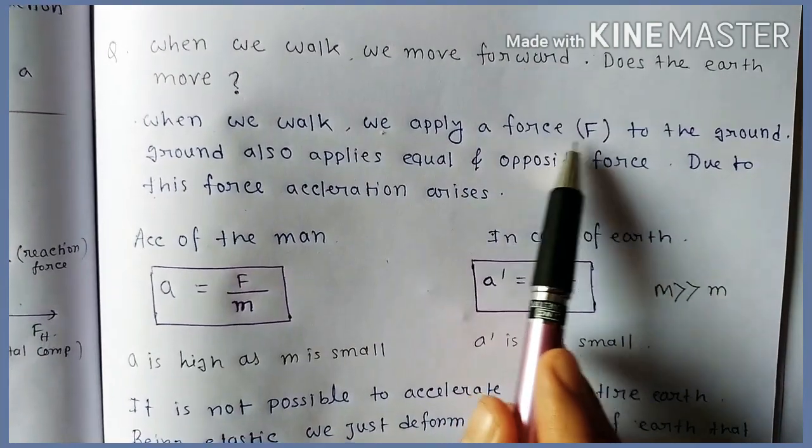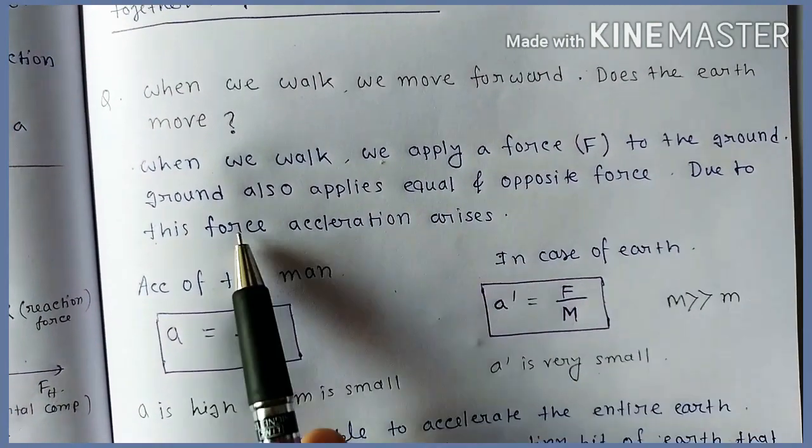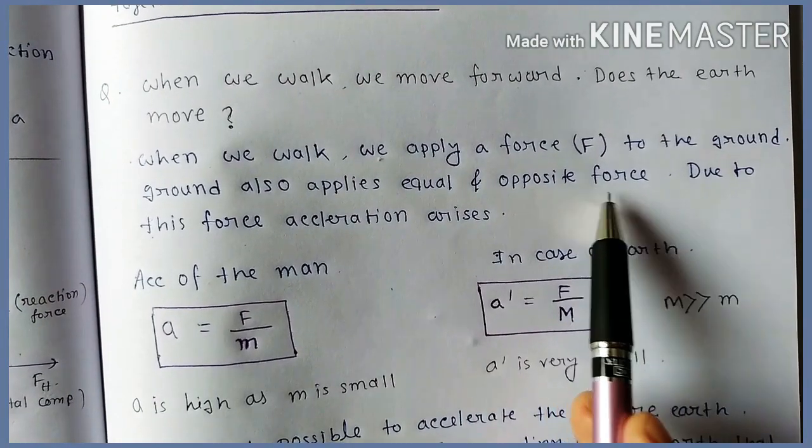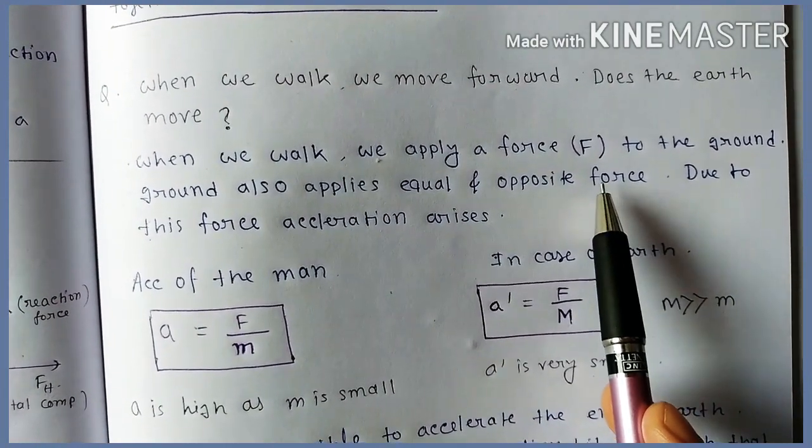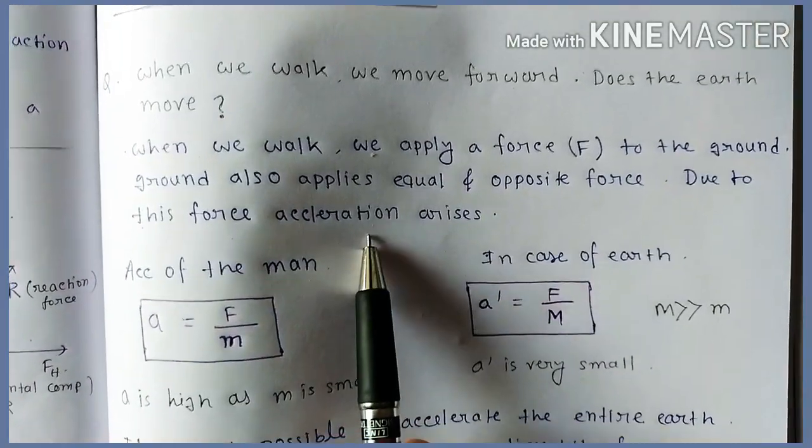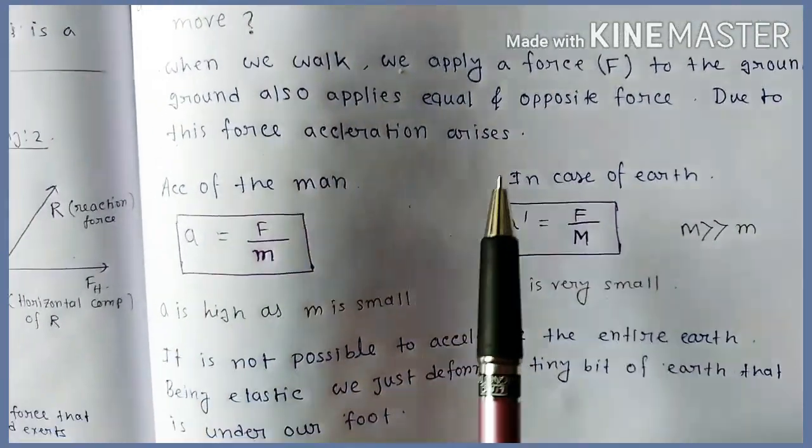When we walk, we apply a force to the ground. The ground also applies an equal and opposite force to the person. Due to this force, acceleration arises.